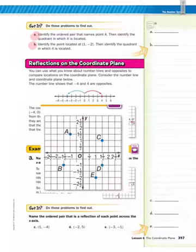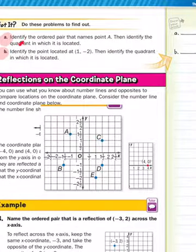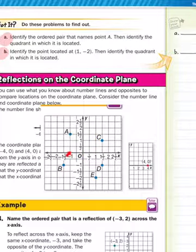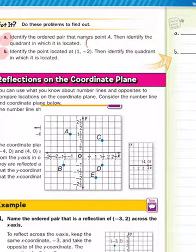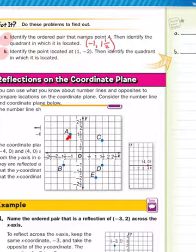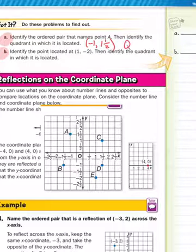All right, let's see how you did. In A, it says identify the ordered pair that names point A, then identify the quadrant in which it is located. Let's go down and find point A right here. Remember, you're doing this on the page to the left in your book. So I go over to the negative 1, up to the positive 1 and a half. That means the coordinates are negative 1, positive 1 and a half. The quadrant — if this is quadrant 1, this is quadrant 2. So the quadrant is going to be Q2.